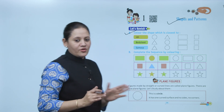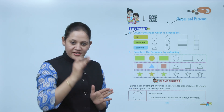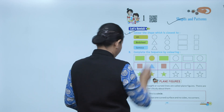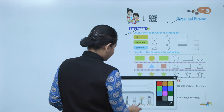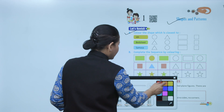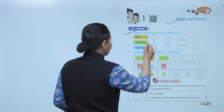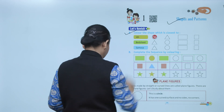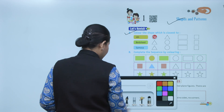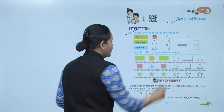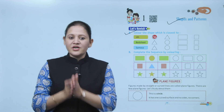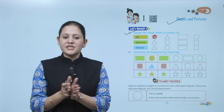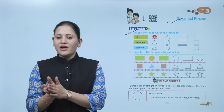What is the shape of idli? Round. So we'll color it. We can take red color and color it like this. First you have to know what the object is, and accordingly you have to color the shape.